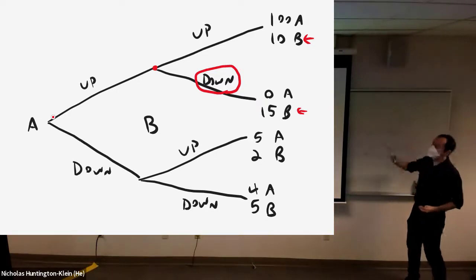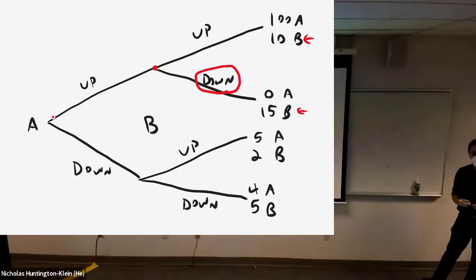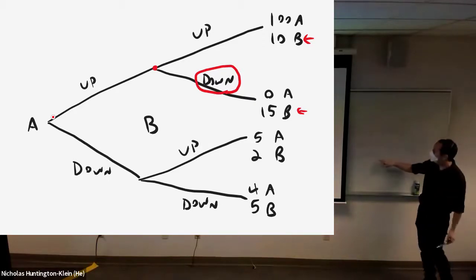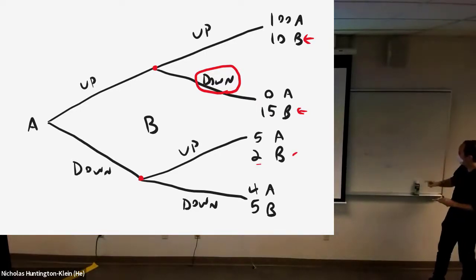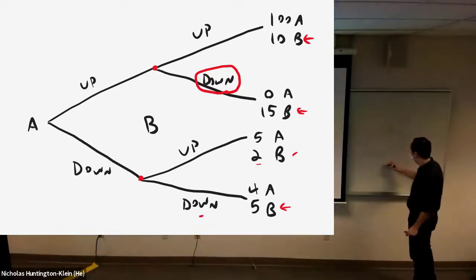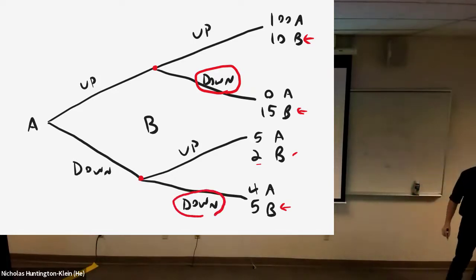All right, so now we know if A goes up, how is B going to respond? We know their best response. Now, what if A went down? If A went down, then B has this choice to make down here. B can go up and get 2 or down and get 5. 5 is better than 2. And so we anticipate that B will go down over there.